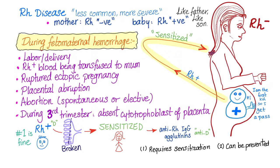Here is the story again. The first baby is fine. During labor and delivery of the first newborn, the placenta is broken; blood from baby mixes with blood from mommy. Now mommy is getting sensitized, producing anti-RH IgG agglutinins. RH disease, unlike ABO incompatibility, requires sensitization.